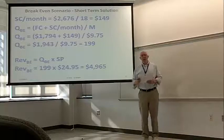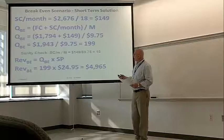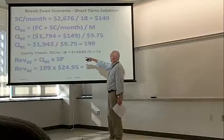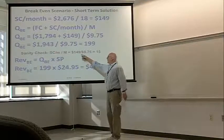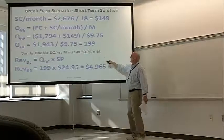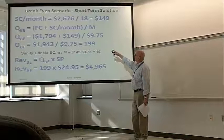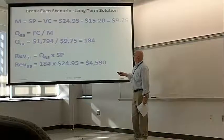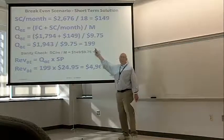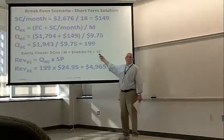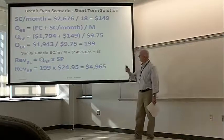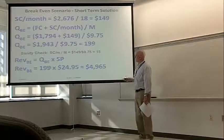I've got a sanity check in here. So, let's check. The start-up cost per month divided by the margin is $149 divided by $9.75. And that comes out to 15 items. And let's see. Without the startup costs, it was 184. With the startup costs, it's 199. And that's 15. So, yes, we didn't make any arithmetic errors between the long-term and short-term solutions.